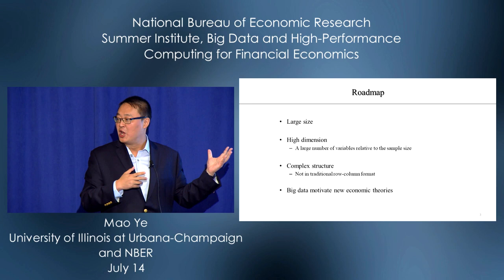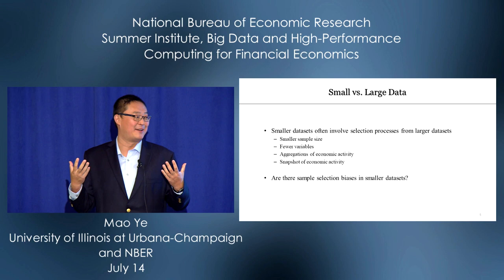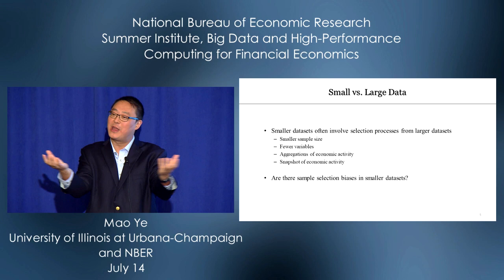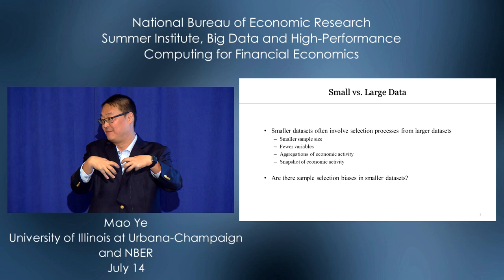Let's start with large size. The first question is: why do we have smaller datasets? Some datasets are naturally small. But others are small because we have a selection process to reduce the size. For example, we can have a smaller sample size, collect fewer variables, aggregate economic activity, or take snapshots. All these things reduce the size of data.